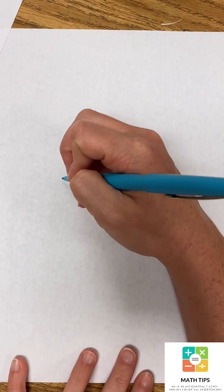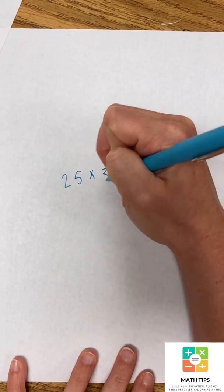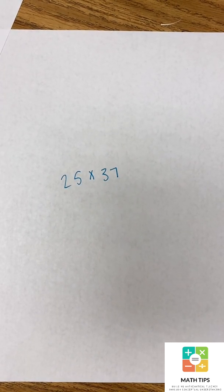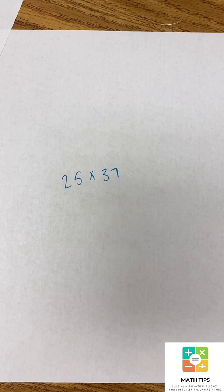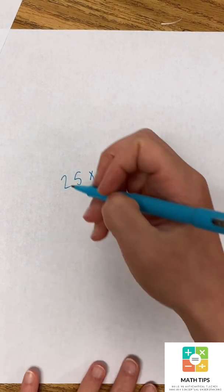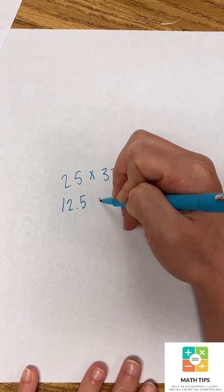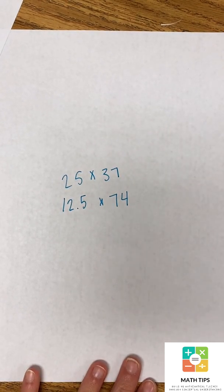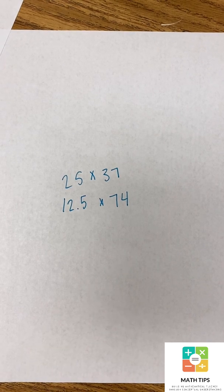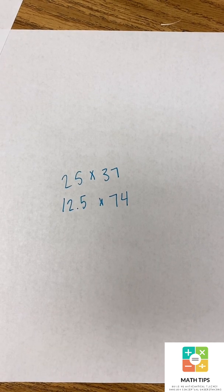Now this strategy does not always work for every problem. Well it does work for every problem. It just may not make the problem simpler to solve. For example, if you had 25 times 37, both of these factors are odd factors. So if you were to half one of them, that would give you a fractional amount or a decimal. So yes, you can half 25 and get 12 and a half or 12.5 and then double 37 to get 74, but that doesn't make the problem any simpler to solve. There's other strategies that would be more efficient.